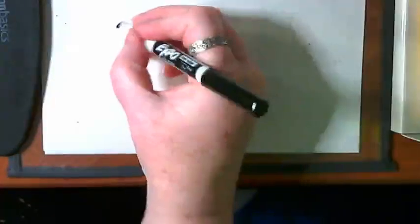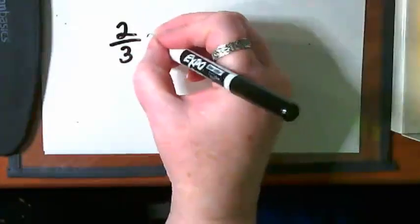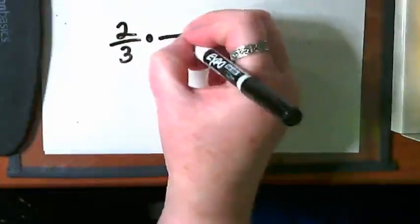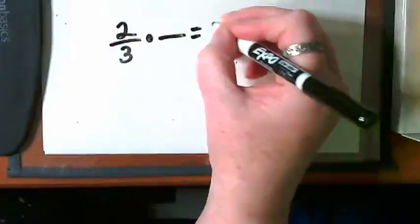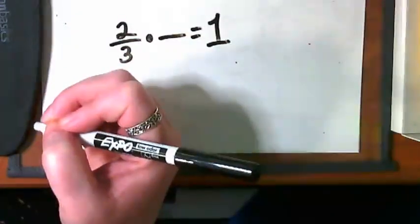So let's pause that idea and let me go to a different fraction. If I have two-thirds times a fraction, is there anything I could multiply it by that you think would get us to the number one?